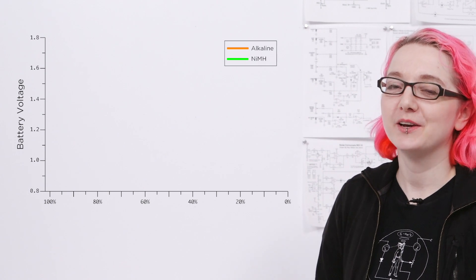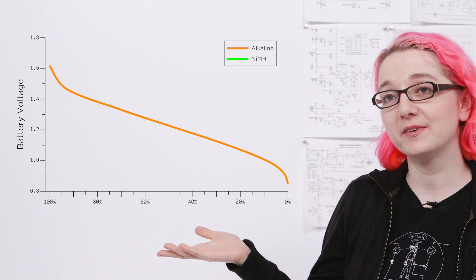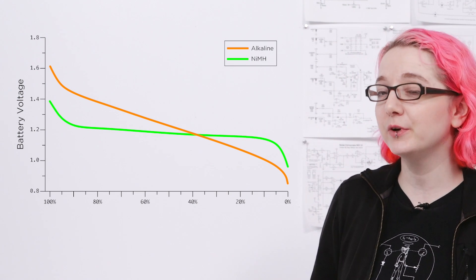One thing to watch out for is with alkaline batteries, the voltage starts at about 1.6 volts and ends at about 1.2, whereas with nickel metal hydride batteries they start at 1.3 volts and end at about 1.2.